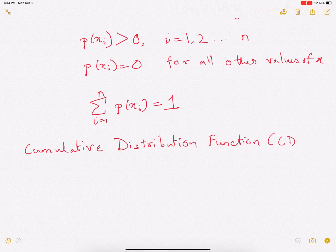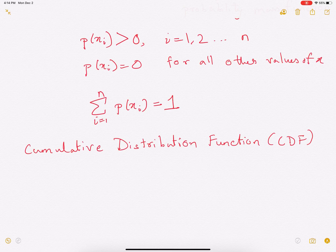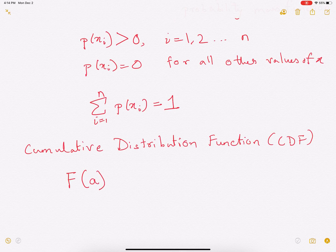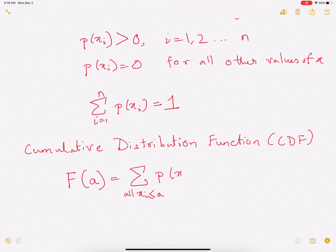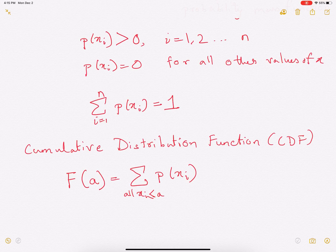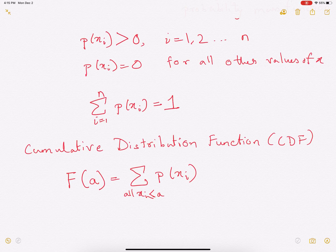Now, how do we get that? So that is given by capital F of A. That is equal to summation of all xi less than or equal to A, P of xi. So, F of A will be all values of the probabilities of x for which till xi equals A.